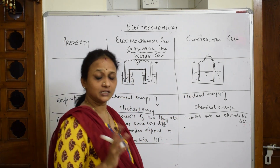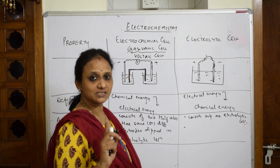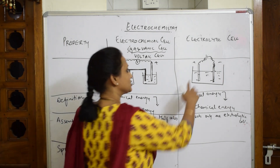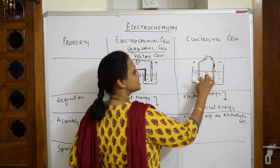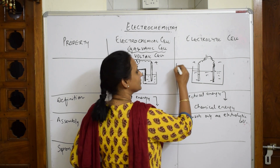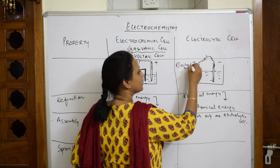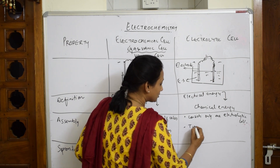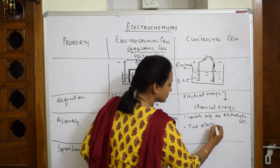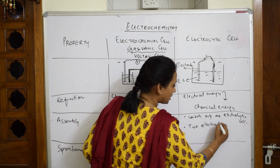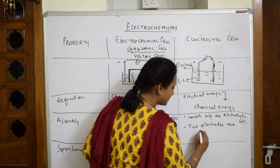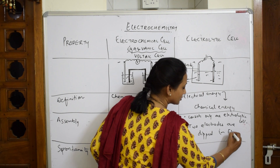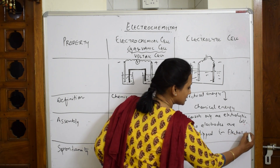In an electrolytic cell, there is only one cell. You have two electrodes dipped in the electrolytic solution, as you can see. This is the electrolyte and this is the electrode — the electrode dipped in the electrolytic solution. The assembly is straightforward.